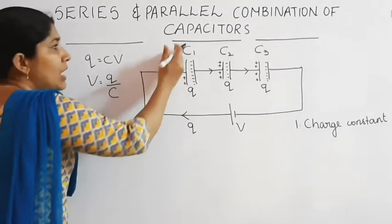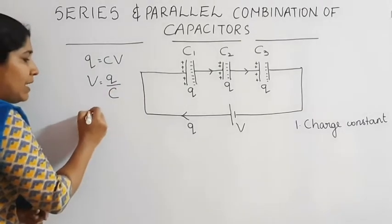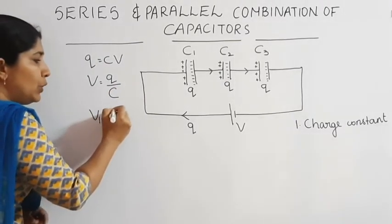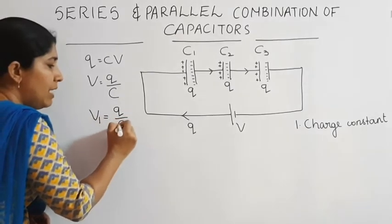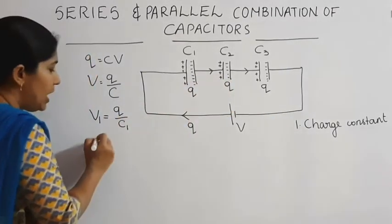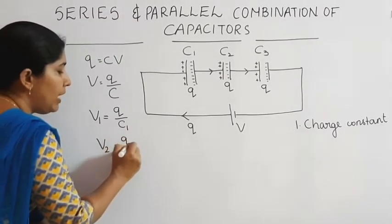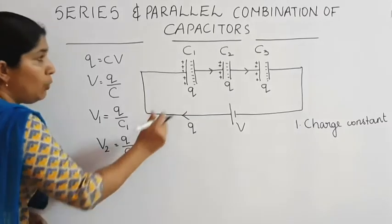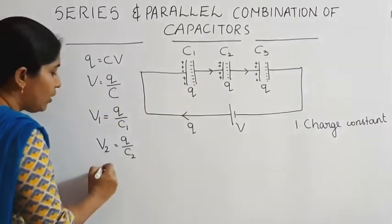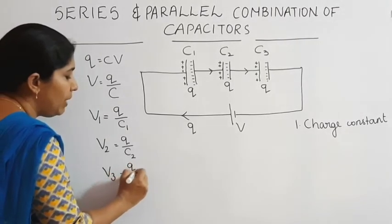The potential across capacitor C1 is taken as V1; V1 is equal to Q divided by C1. The potential across C2 is taken as V2; V2 is equal to Q divided by C2. The potential across C3 is V3; V3 is equal to Q divided by C3.